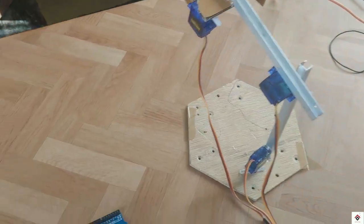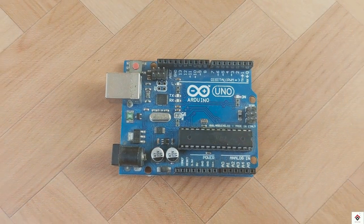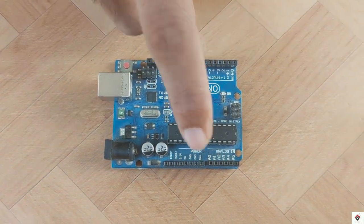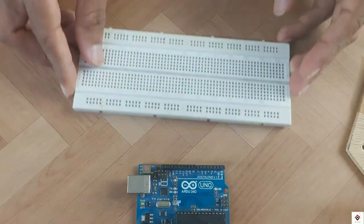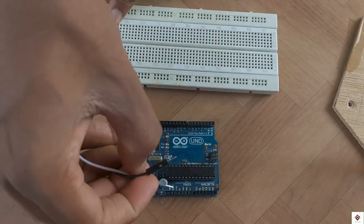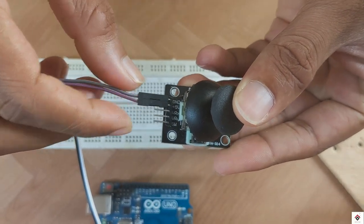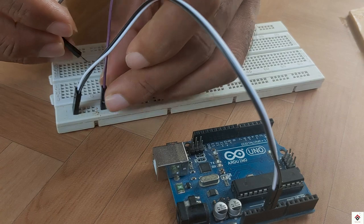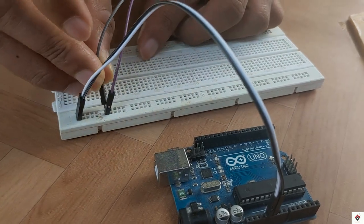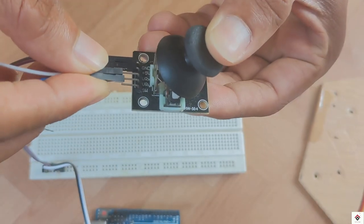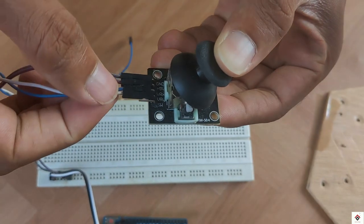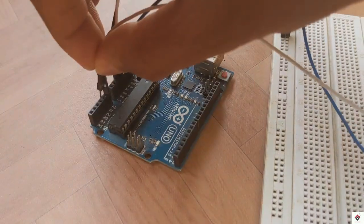Moving on to the connections, I'll take this 5 volt and ground from the Arduino onto the breadboard. From joystick 1, the 5 volt and ground goes to the Arduino 5 volt and ground. The x and y axis goes to Arduino analog pins A0 and A1.